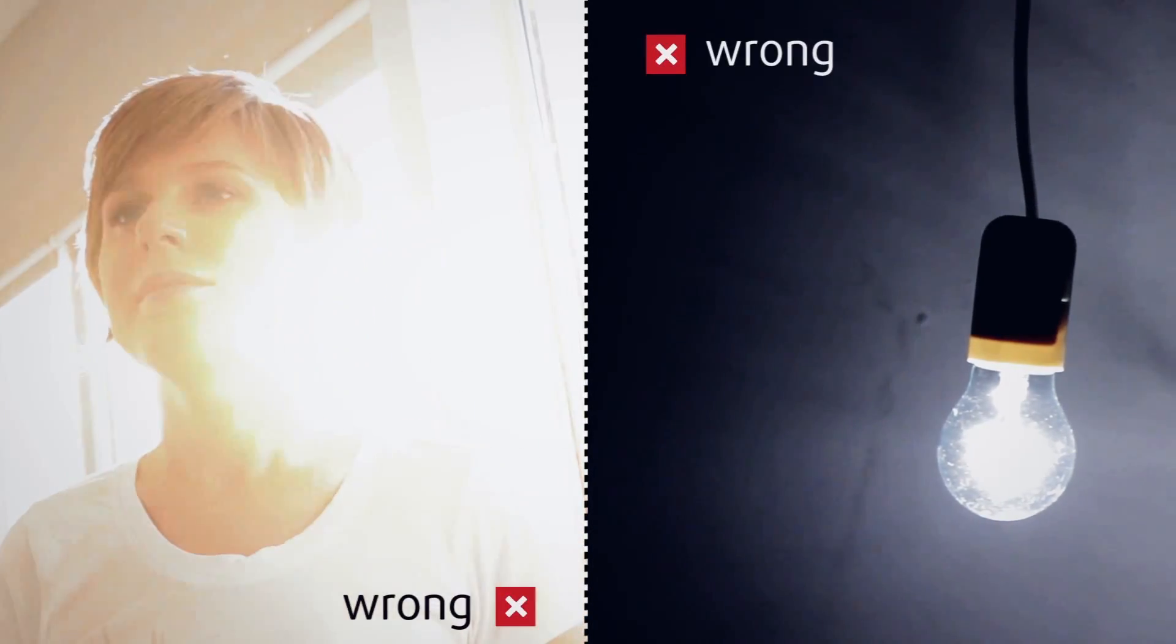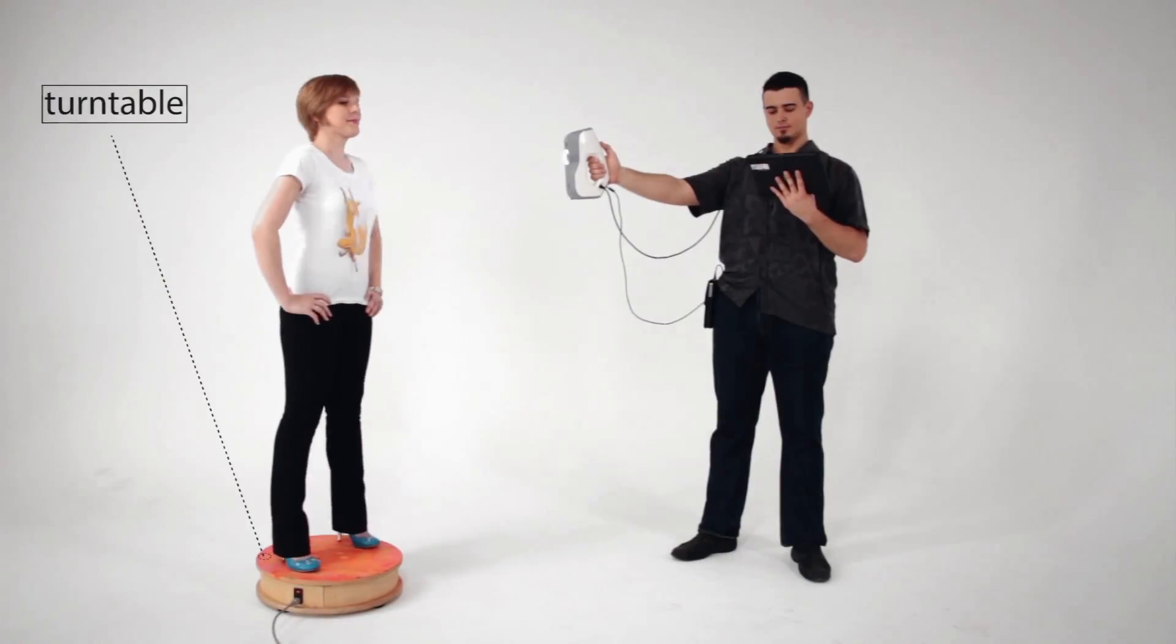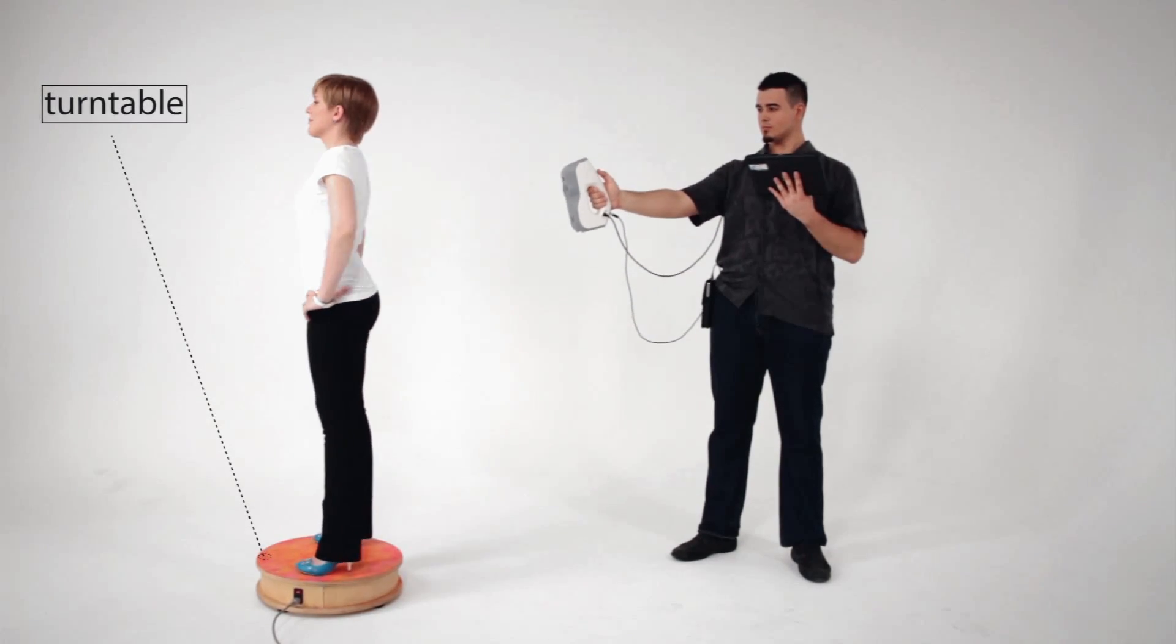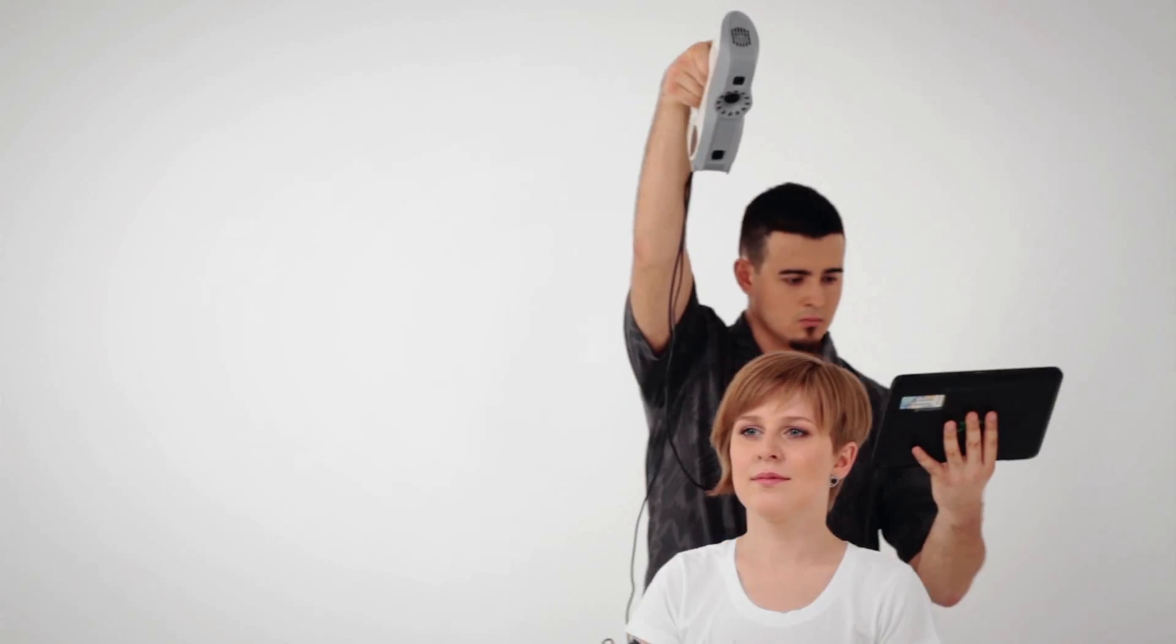Avoid dim lighting and unevenly lit environments as this may affect the texture of the model. A turntable will make scanning much easier since you won't have to walk around the person. But don't worry if you don't have a turntable, you can just connect EVA to a tablet and battery.